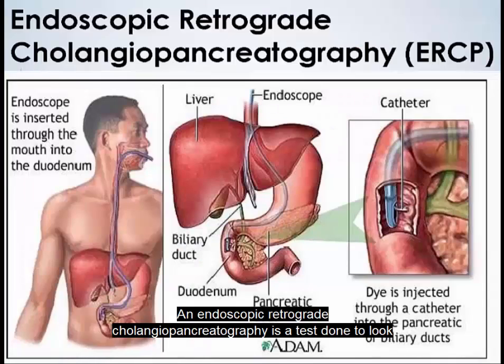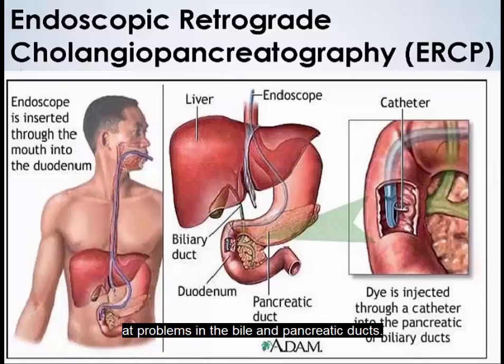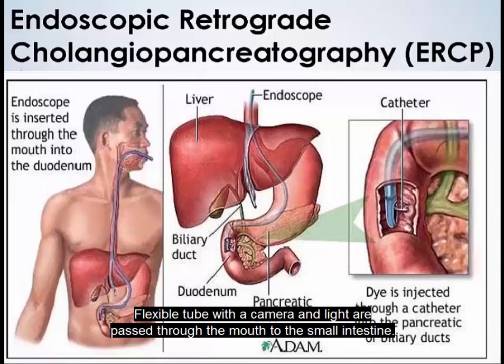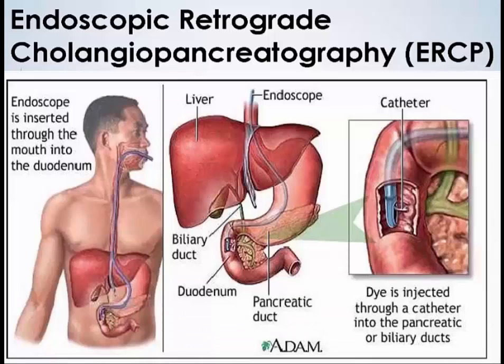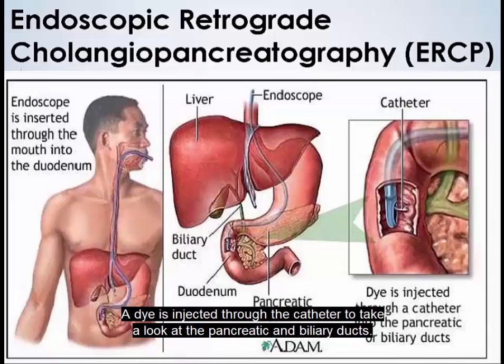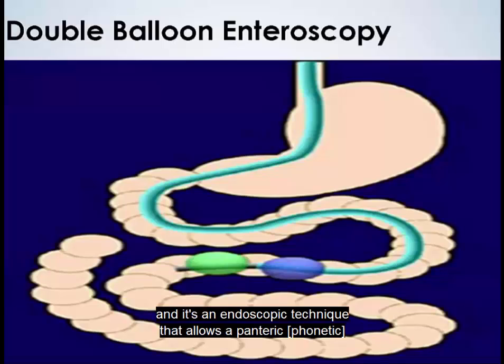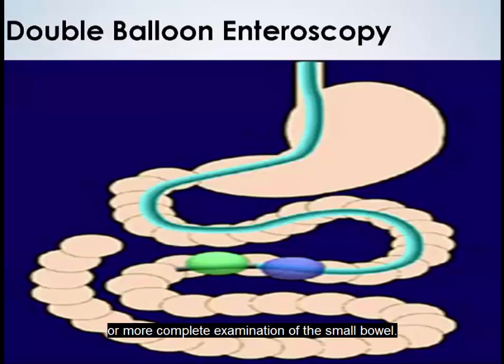An endoscopic retrograde cholangiopancreatography (ERCP) is a test done to look at problems in the bile and pancreatic ducts, especially for complex or repeated cases of pancreatitis or disorders of the bile ducts. A flexible tube with a camera and light is passed through the mouth to the small intestine, and a dye is injected through the catheter to examine the pancreatic and biliary ducts. A double balloon enteroscopy, also known as push-pull enteroscopy or double bubble, is an endoscopic technique that allows a more complete examination of the small bowel.